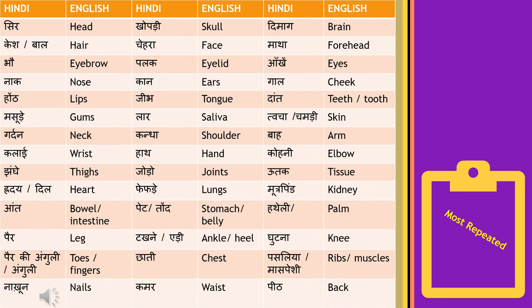'Mootrapind' means kidney. 'Aant' ya 'aantdi' ko hum bolenge bowel or intestine. 'Pet' means stomach or belly.